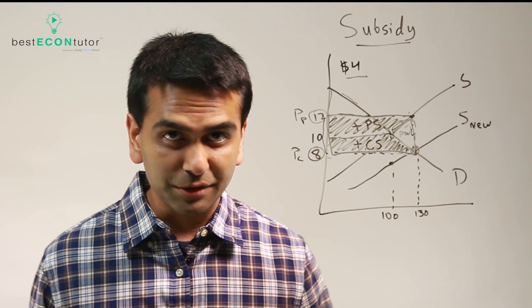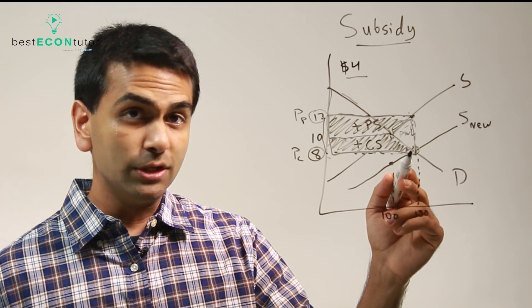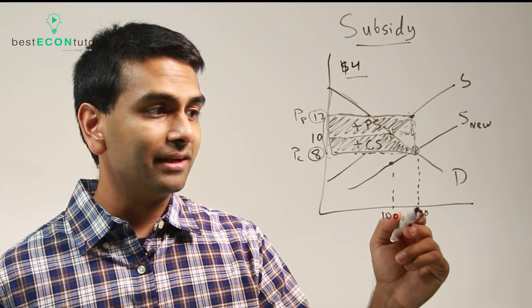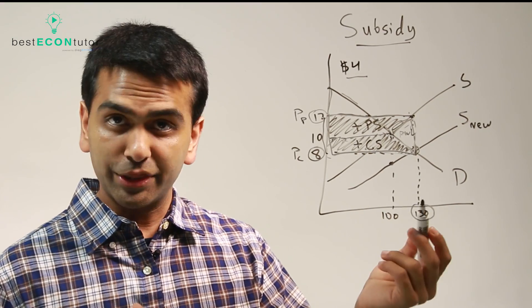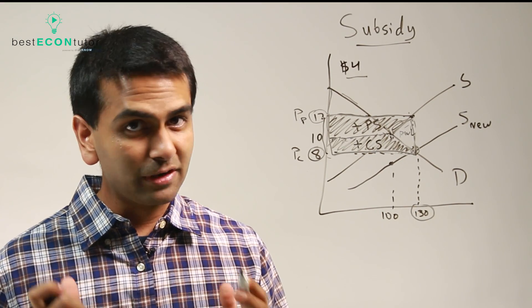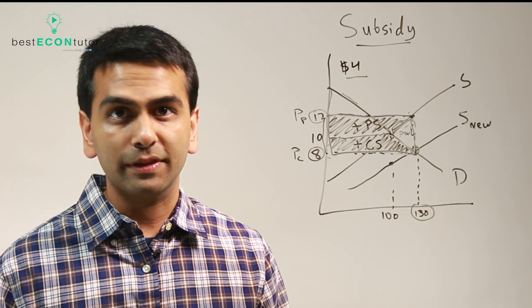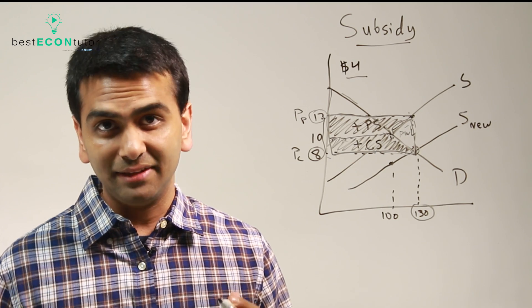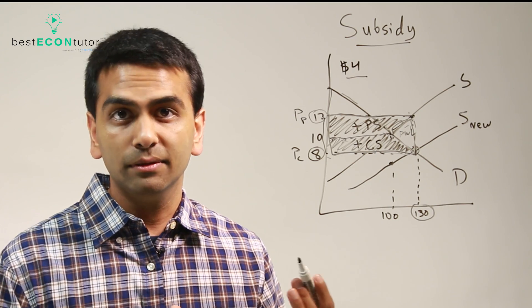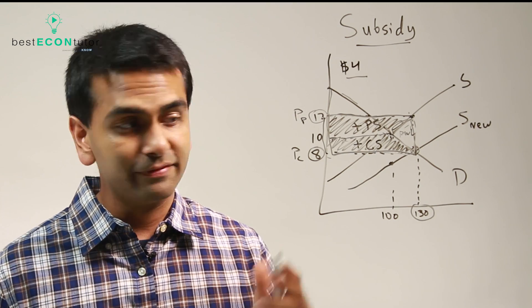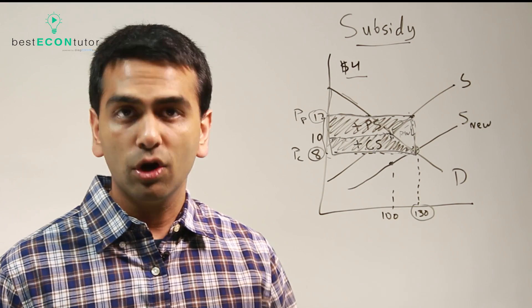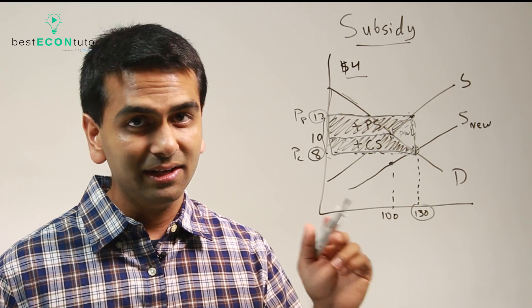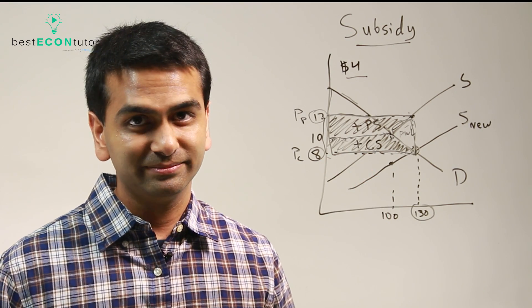One final thing to notice about the subsidy is that the new quantity in the market is higher than before — it went from 100 up to 130 in this case. For every other type of government intervention, whether it was a ceiling, a floor, a quota, or a tax, the quantity was lowered by the government intervention. But the subsidy is the only case where government intervention raises the quantity, yet there's still a deadweight loss.